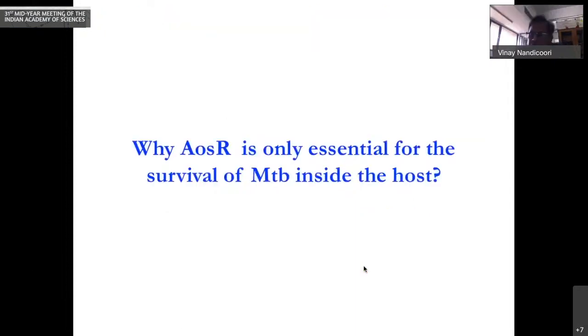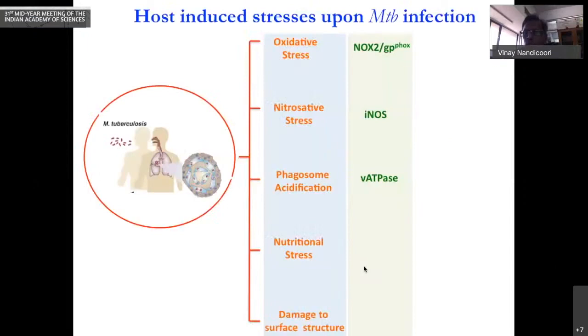So the question is, if this transcription factor is essential for survival inside a host, why is it not essential for the bacteria in the context of in vitro growth? Obviously it is something to do with the stress imposed by the host. What kind of stresses does one face when you go into the host? You have oxidative stress, nitrosative stress, phagosomal acidification, nutritional stress, and damage to surface structures. What we can do is subject the pathogen to these stresses one by one independently and see what happens to the survival.